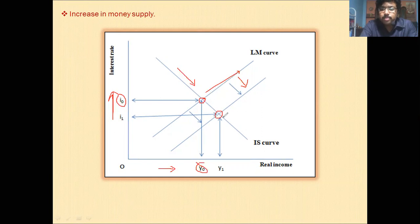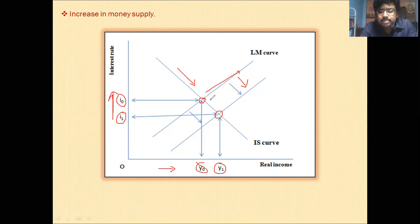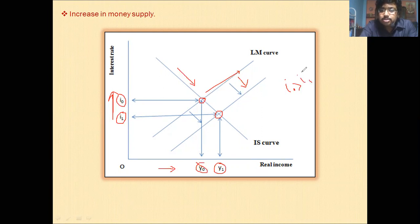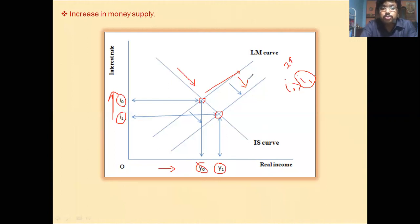At this new equilibrium, where the goods market as well as the money market are in equilibrium, we have a lower rate of interest and higher real income. As there is an increase in money supply, to maintain equilibrium in the money market, the interest rate should be low — that is I₁, where I₀ is greater than I₁. At this lower rate of interest, investment will be high, so in the goods market the output will be high, and for that reason income is high. This change in real income is because of the increase in money supply through the increase in investment.